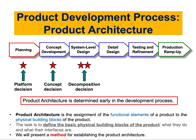After deciding on the concept we want to work with and develop, then comes something called system-level design. This is a decomposition decision. We are now at a stage where we start looking at the system-level design and the components of our product. We have a general concept about what our idea will do and how the product will function — now we need to go into the details of it. This is what we call product architecture. We did platform decision, concept decision, and now we have to do a decomposition decision and identify what kind of components our product should have.